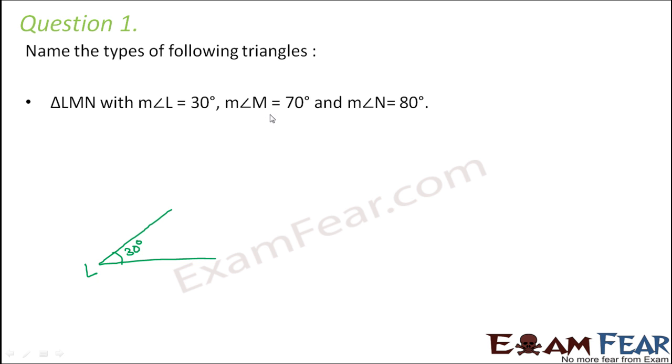Angle M is 70 degrees. So let's call this point as L, M, N. So now when we join this triangle, we see that this angle M is 70 degrees and this angle N is 80 degrees. Now these are not accurate measurements. We are just drawing a rough triangle. So what do we see? The measurement of all the three angles are less than 90 degrees. That means this is an acute angled triangle.